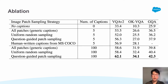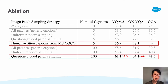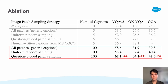We perform an ablation on image patch sampling strategy during caption generation. By having 100 question-guided patch sampling captions, the performance surpasses five human-written captions on VQA-V2 and OKVQA. The question-guided patch sampling is better than generic captions that use all image patches for generation. We also compare with uniform random sampling, and our question-guided captions are shown to be better.